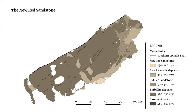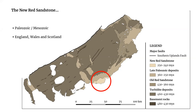The Palaeozoic Era was followed by the Mesozoic Era, represented locally by the New Red Sandstone, which, as the name suggests, is younger than the Old Red Sandstone and was deposited at the end of the Palaeozoic Era and the beginning of the Mesozoic Era. It occurs mostly in England but extends as far north as Scotland, and is generally represented by sandstones laid down in desert conditions.